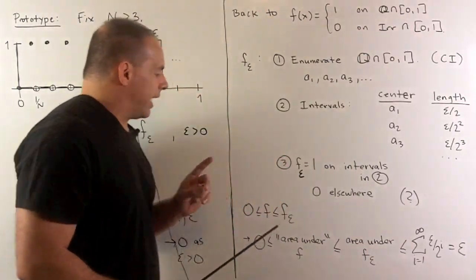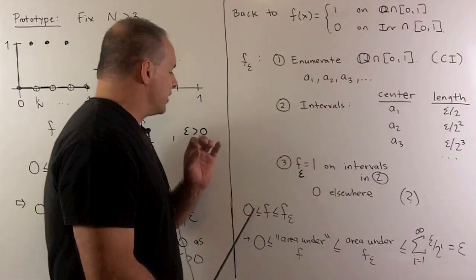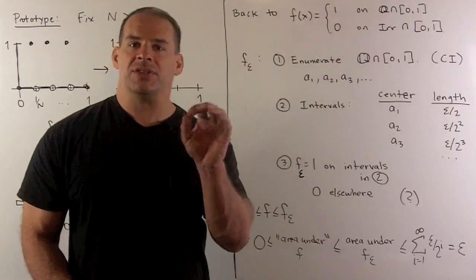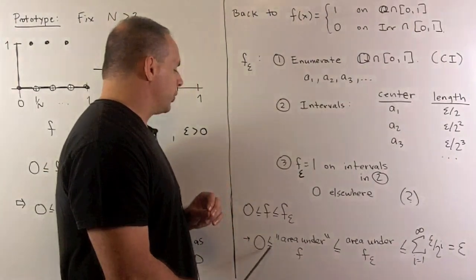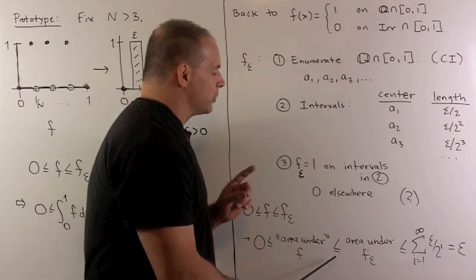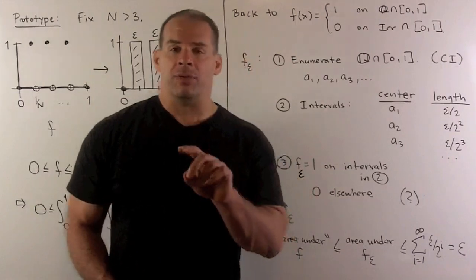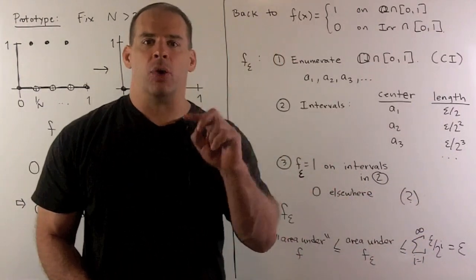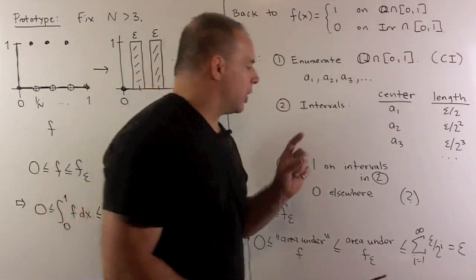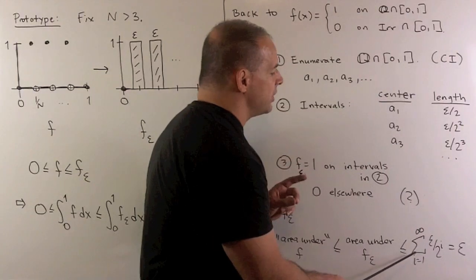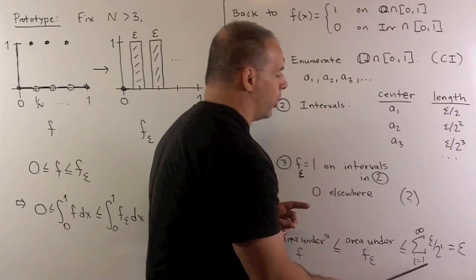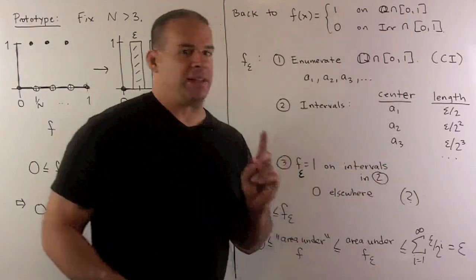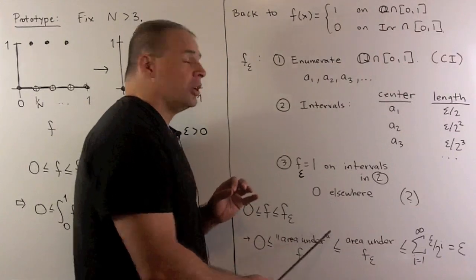To get a feel for that, let's look at what we did before. We have zero is less than or equal to f, which is less than or equal to f sub epsilon. In terms of areas, zero is less than or equal to the area under this function, less than or equal to the area under f sub epsilon. Thinking in terms of rectangles, the area for each rectangle is one times epsilon over two to the i. They may overlap, so we use an inequality, giving the series summing epsilon over two to the i as i goes from one to infinity, which sums to epsilon. Since epsilon was arbitrary, driving it to zero says the area under f should be equal to zero.